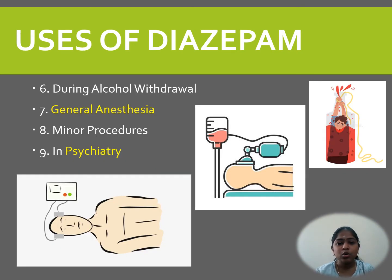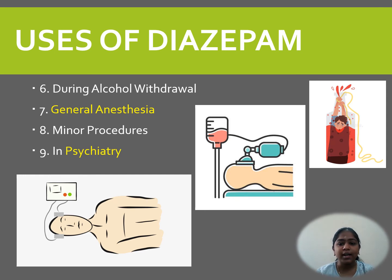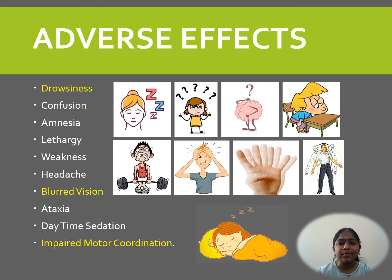Diazepam is used during alcohol withdrawal and as an intravenous anesthetic for minor procedures like endoscopies, fracture reduction, cardiac catheterization, and prior to electroconvulsive therapy. For the control of mania — a psychiatric condition — diazepam is used as an adjuvant.